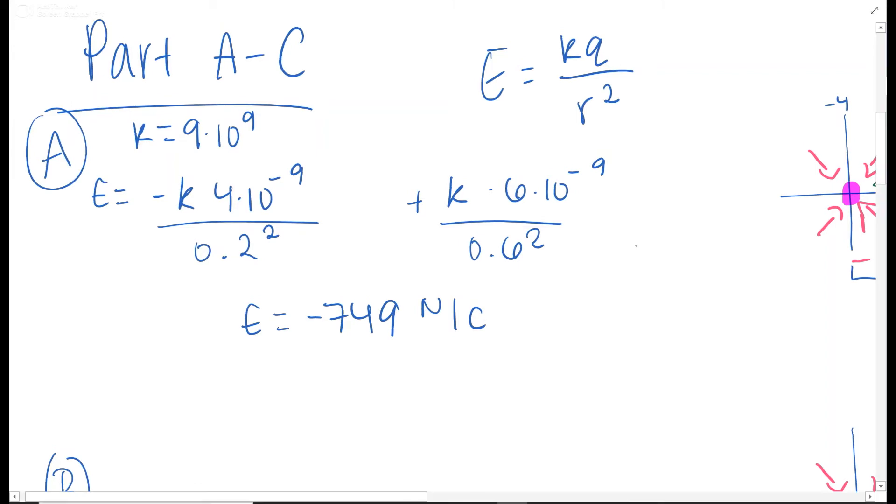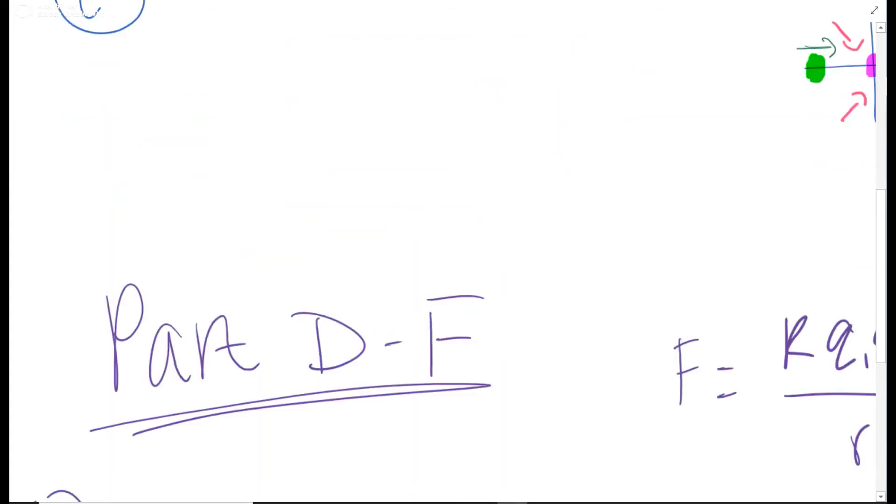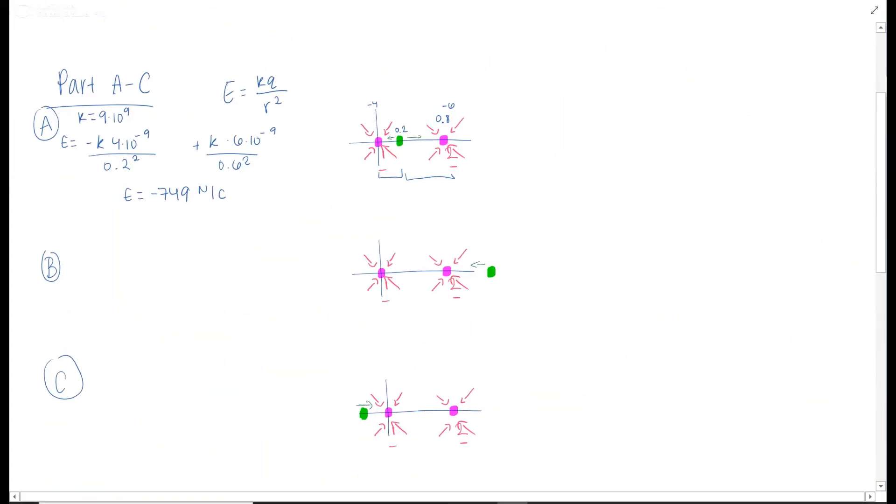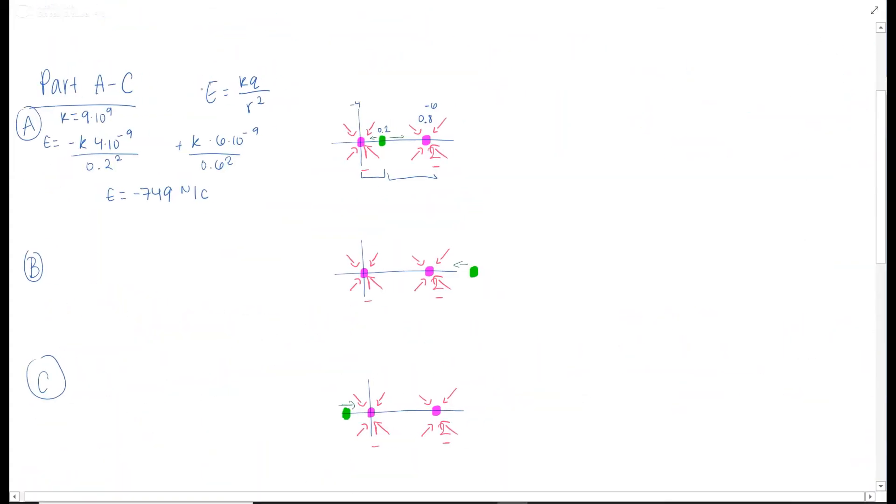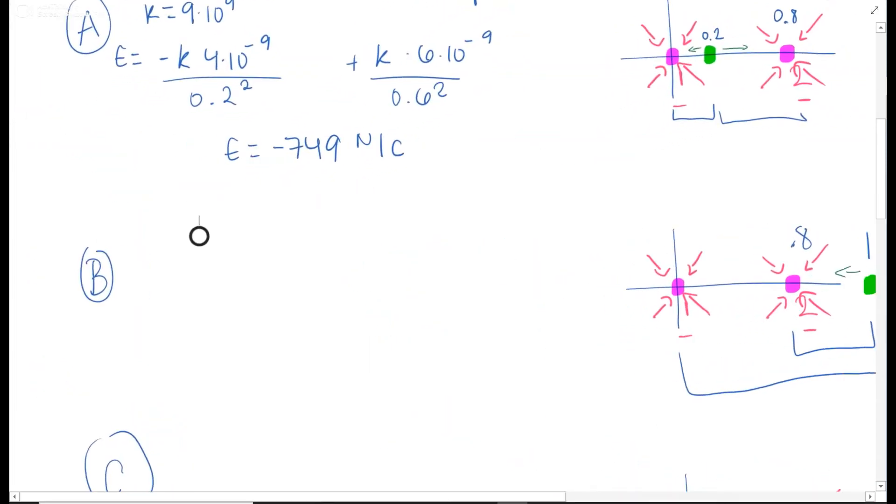Alright, for part B, we're basically using the exact same thing, still using the same equation. Still using the same equation here, but we're gonna have a little bit of a different picture. So now our point is at 1.2 over here, and this is still 0.8. So we have some new distances between our points. But it's basically the exact same thing.